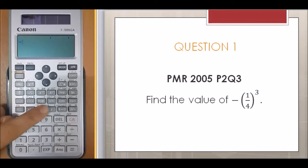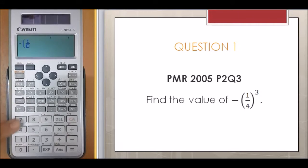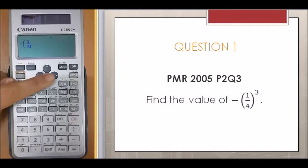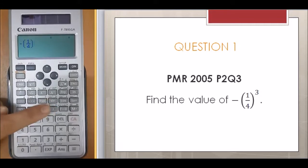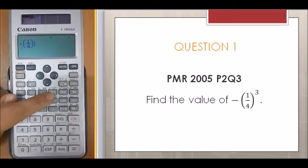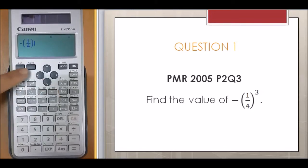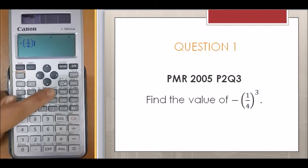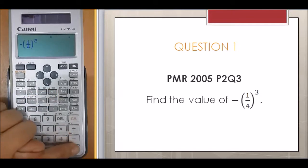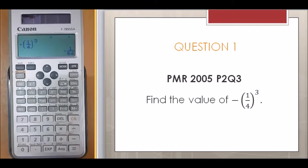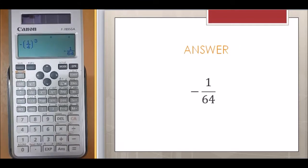Press negative, open bracket, 1, fraction 4. Don't forget to press right key, close bracket. Note that there is an X cube above this X squared button. So, press Shift X cube. Equals to negative 1 over 64.